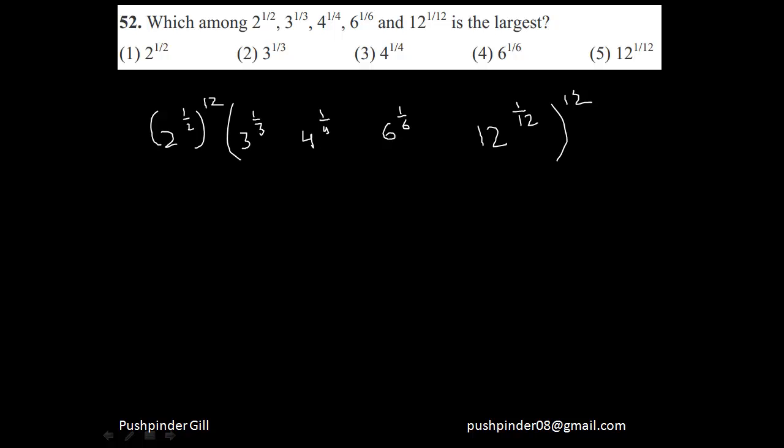So this number is going to become 2 to the power 6. This will become 3 to the power 4. This will become 4 to the power 3. This will become 6 to the power 2. And this will become 12 to the power 1. So this will remain 12. This will remain 36. This will become 64. This will become 81. And this will become 64 again.